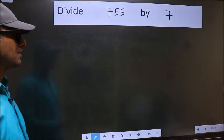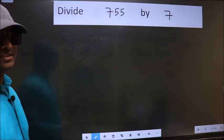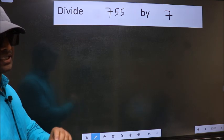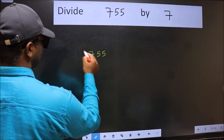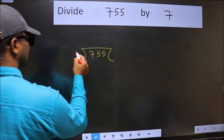To divide 755 by 7, we should frame it in this way: 755 here and 7 here.